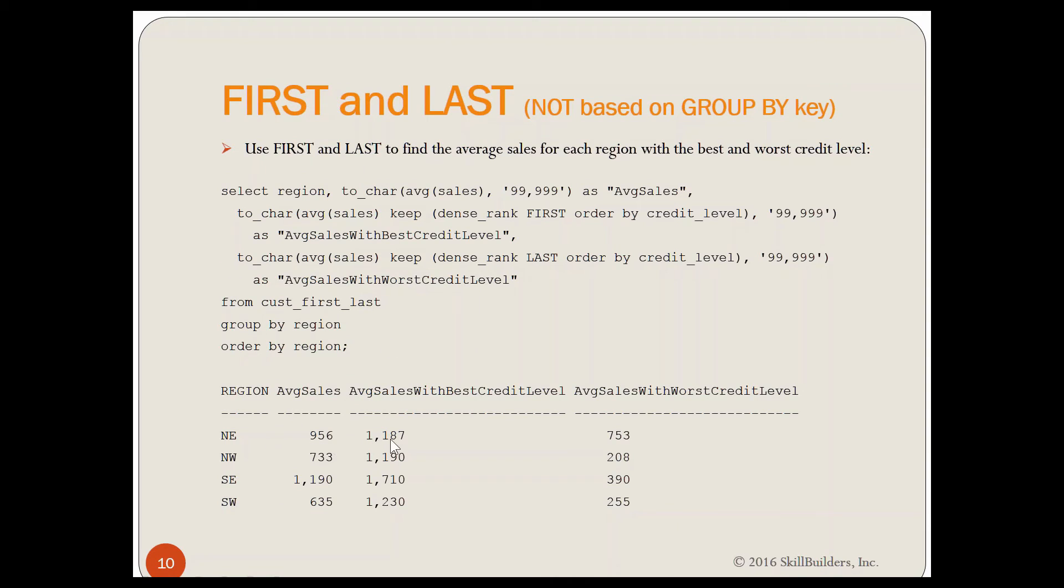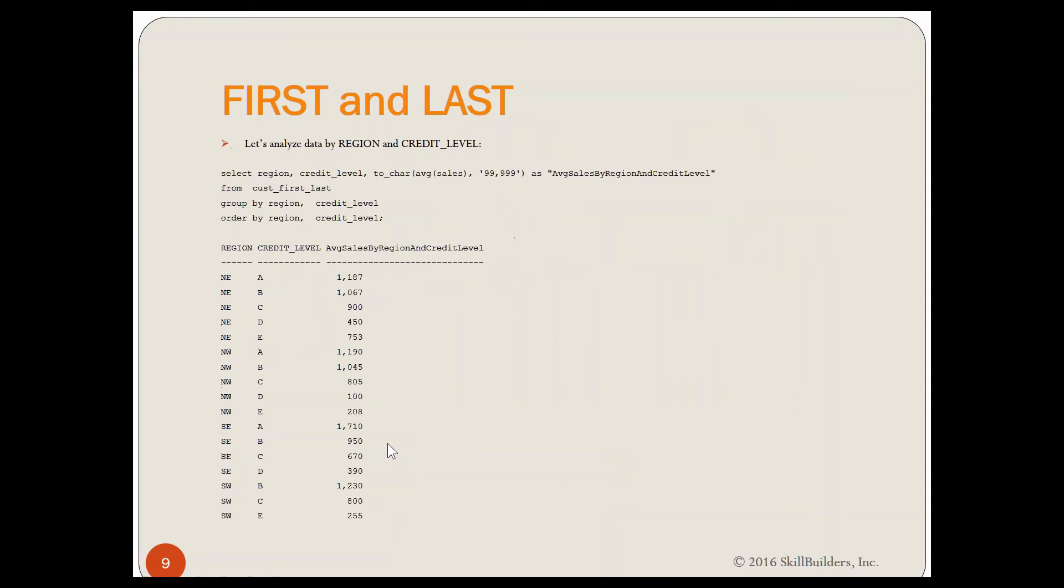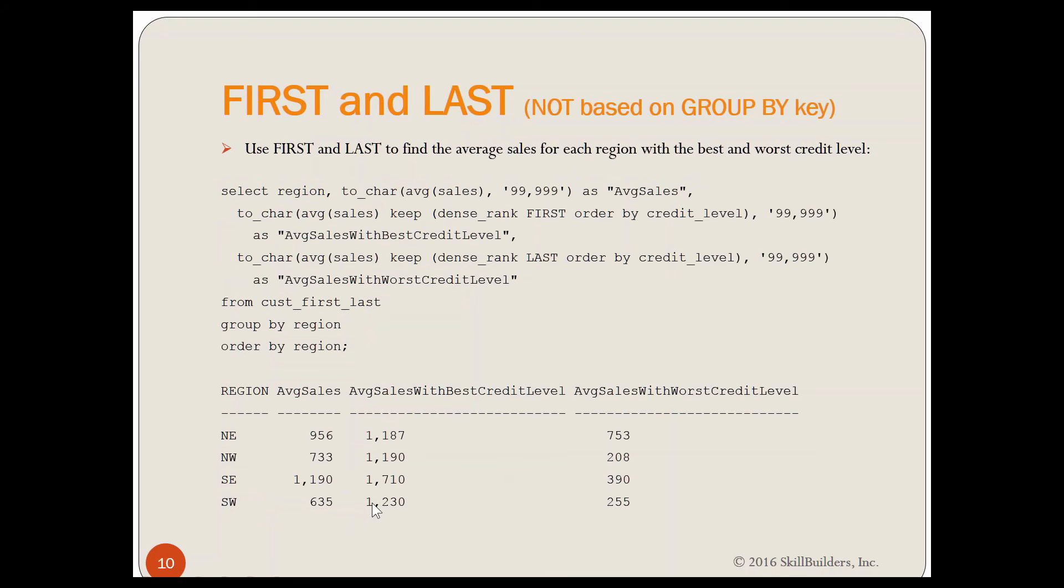Notice this is giving me my average sales for all Northeast, and then what's the average sales for the customers with the best credit level, and what's the average sales for my customers with the worst credit level? It's my 1187, 753, which is what I saw here, 1187, 753. For Southwest, it was 1230 and 255, 1230 and 255.